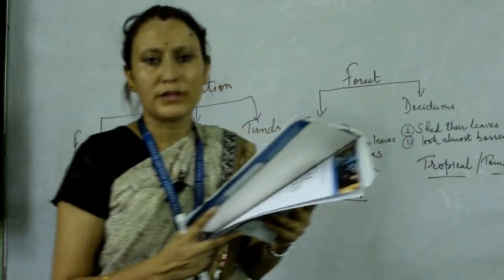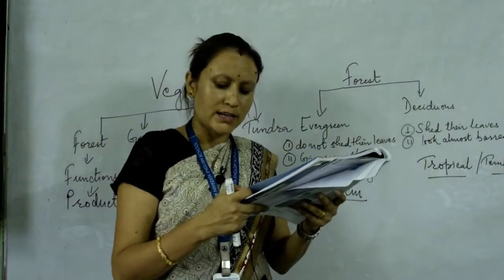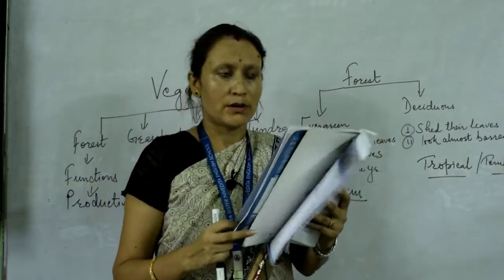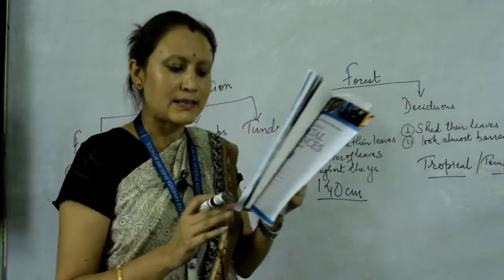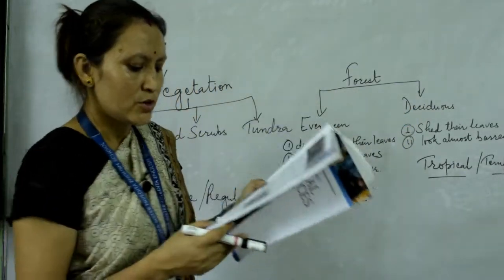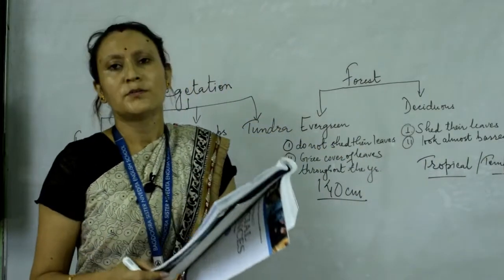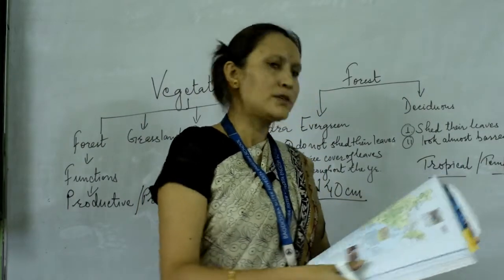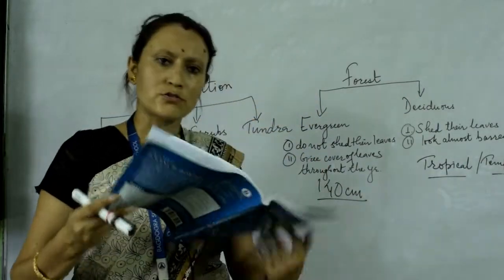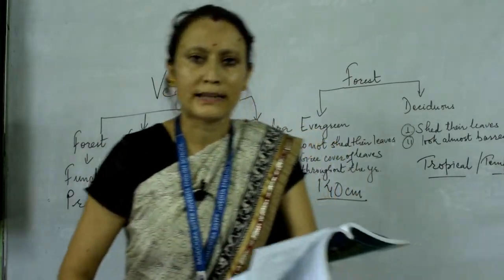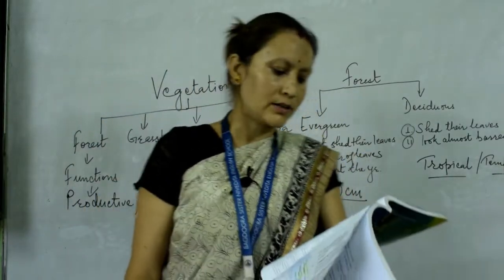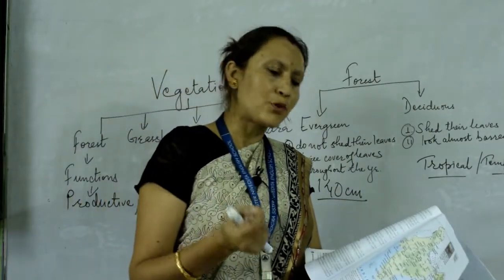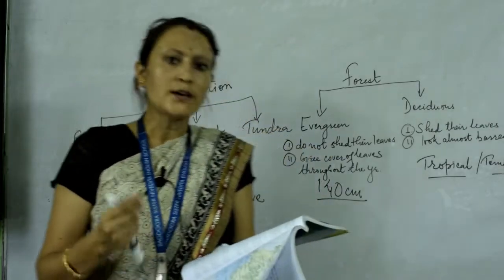Next topic is germination. Germination is a process in which a plant emerges from the seed or spore and begins its growth — a process by which a new plant emerges from the seed. Your next term is pollination. Pollination is a process by which pollen — that yellow-colored pollen — is transferred in the reproduction of plants. Pollination is a process of transformation of pollen grains.